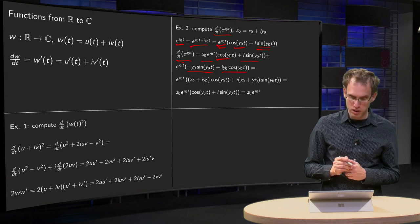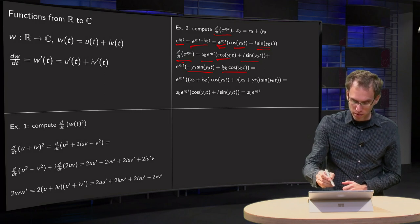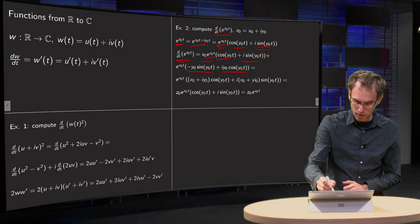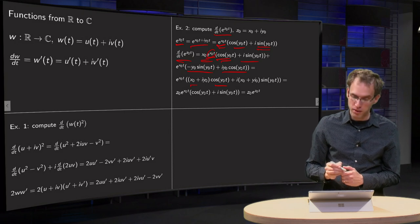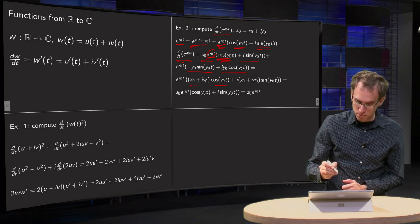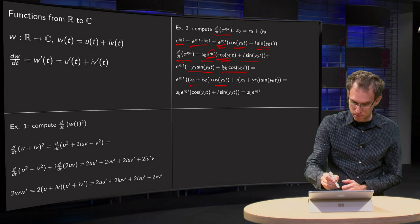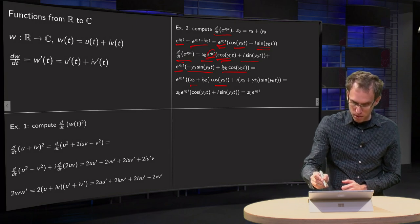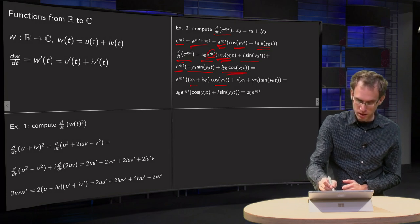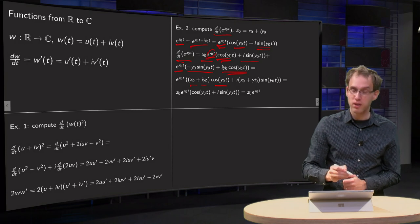And now we can simplify this a bit. We have e^(x₀·t) times x₀·cos(y₀·t), and e^(x₀·t) times i·y₀·cos(y₀·t) grouping those terms together.